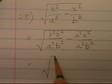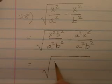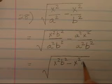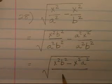This will be x squared b squared minus x squared a squared, all over a squared b squared.